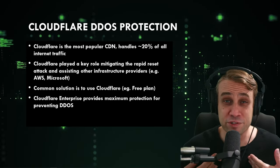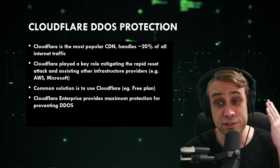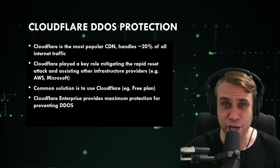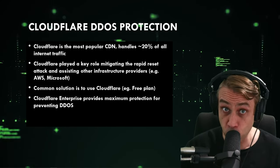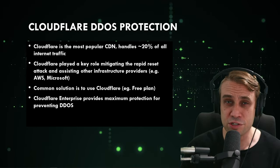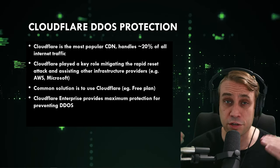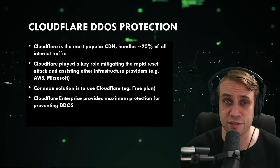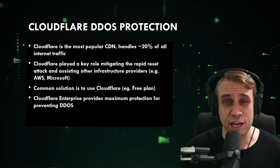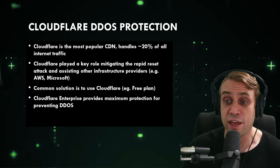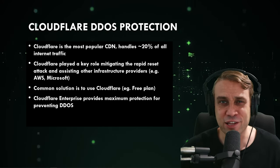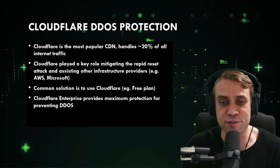For any small or medium business with business-critical needs, you really need to consider how you are mitigating DDoS attacks. My preference for DDoS protection is Cloudflare's DDoS protection. Cloudflare is the most popular content delivery network on the web — around 20% of all internet traffic is handled by Cloudflare. This puts Cloudflare in a really unique position because it's able to monitor such a large percentage of internet traffic and detect these kinds of attacks very early. As we saw in those press releases, Cloudflare played a key role in mitigating the Rapid Reset Attack and was of key assistance to other infrastructure providers like AWS and Microsoft.